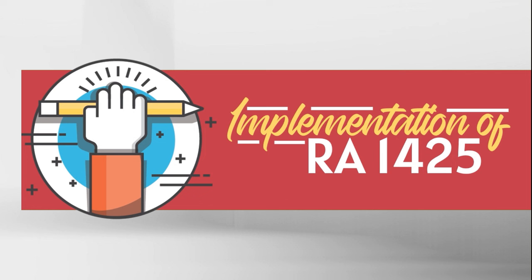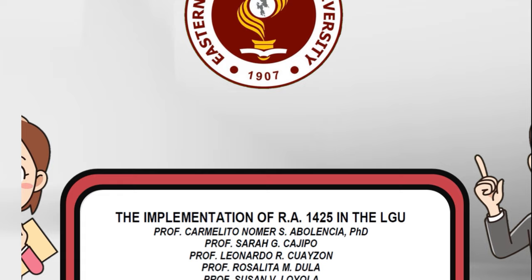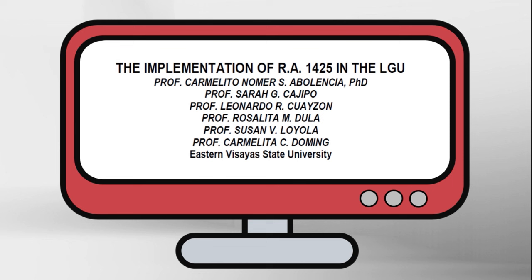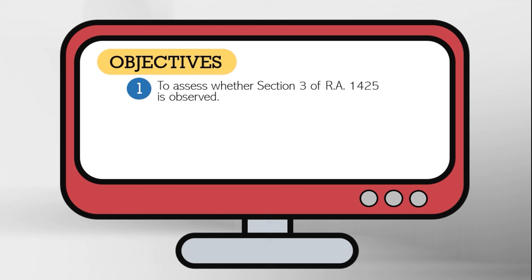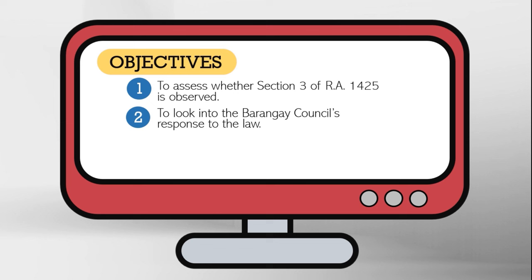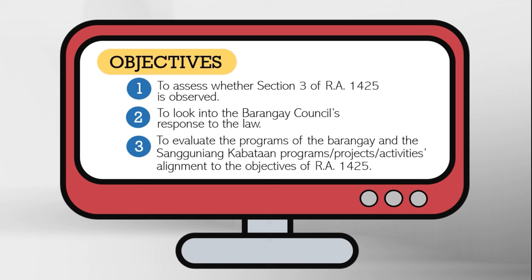Let's move on to the implementation of RA 1425. Some professors of the Eastern Visayas State University conducted a study entitled 'The Implementation of RA 1425 in the LGU.' This study was conducted to find out the implementation of the Rizal Law in the 13 barangays within the downtown area of the city. It had the following objectives: first, to assess whether Section 3 of RA 1425 is observed; second, to look into the Barangay Council's response to the law; third, to evaluate the programs of the barangays and Sangguniang Kabataan programs, projects, and activities in alignment with the objectives of RA 1425.